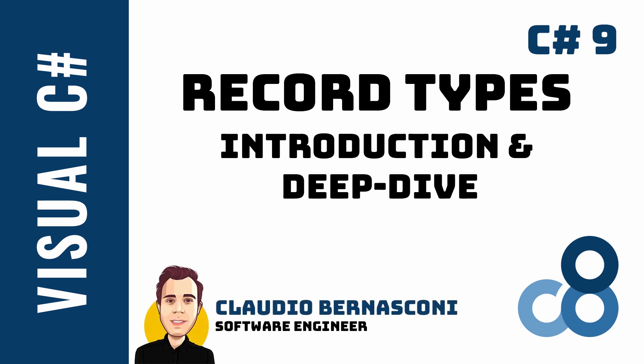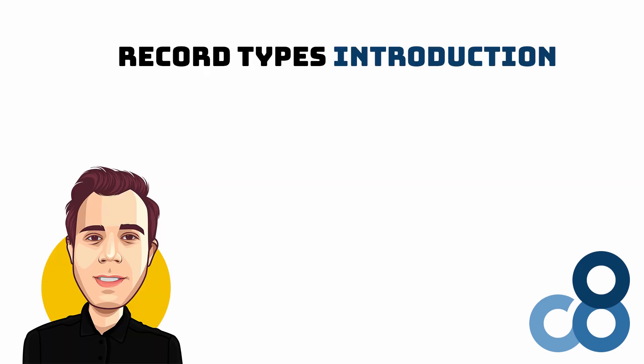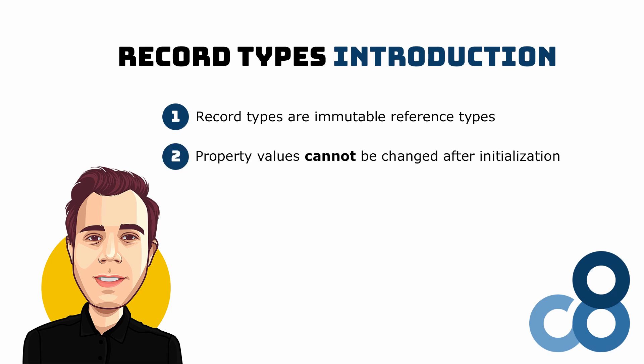I'm a software engineer with more than 10 years of experience with the .NET platform, and in this video we're going to learn about record types in C# 9. Record types are introduced in C# 9 to allow developers to write immutable reference types, meaning that the properties of an instance of a reference type cannot change after its initialization.